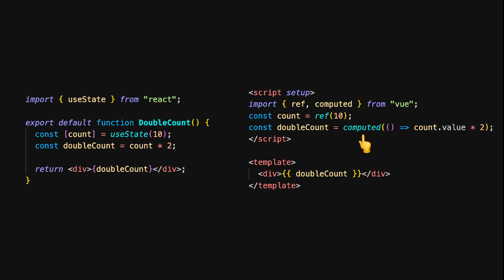In Vue, we have something called computed properties. Instead of recalculating doubleCount every time the component renders, Vue's computed property efficiently caches the result until the dependent count value changes. This allows Vue to optimize performance by recalculating doubleCount only when necessary. So while React recalculates on every render, Vue's computed property is smart enough to do it only when needed, making your app more efficient.